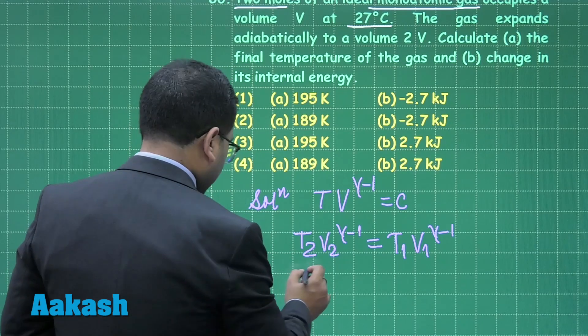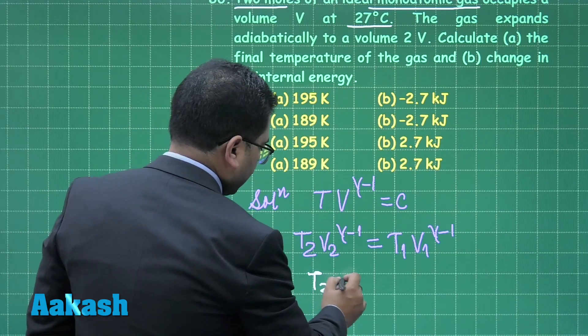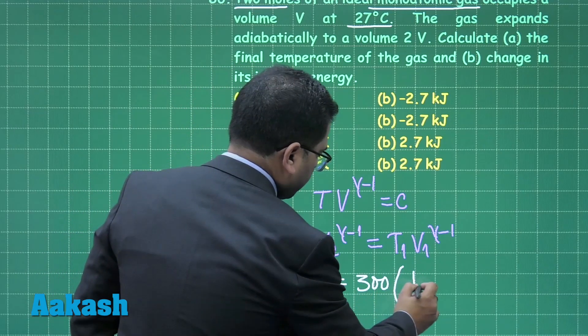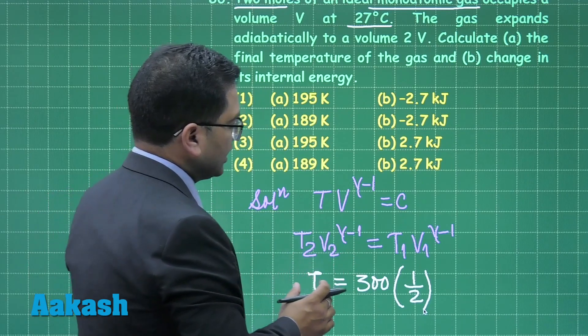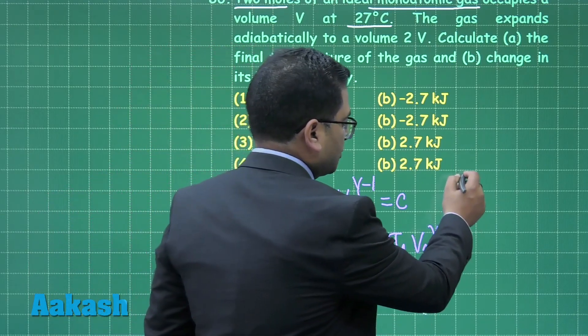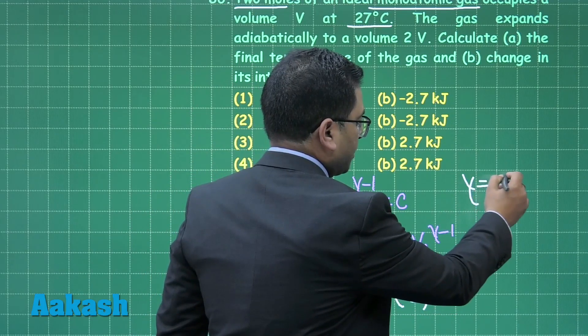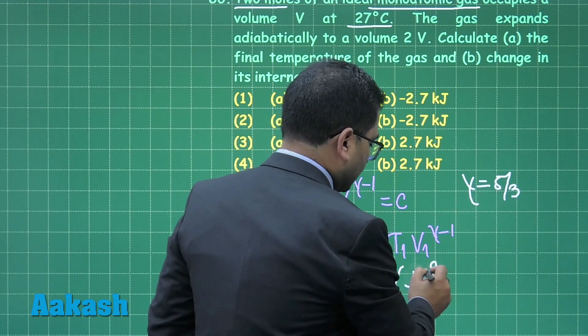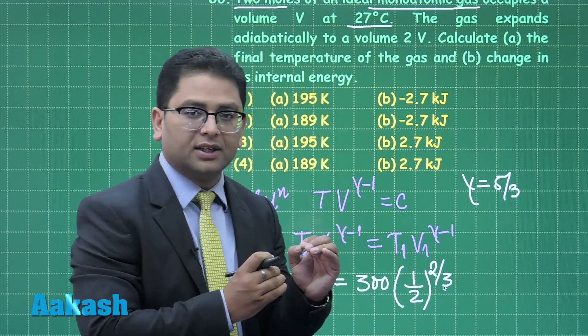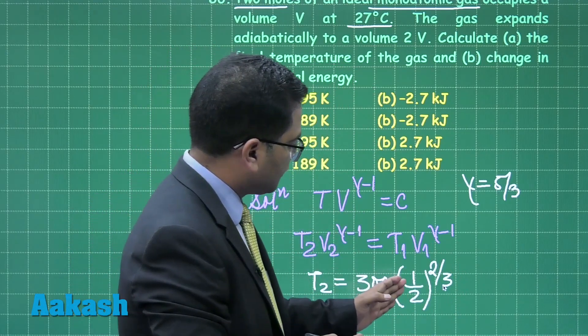And I get the value of T_2 as, right, that is going to be 300 and 1 by 2, because V_2 is 2V, gamma minus 1, 5 by 3 minus 1. Gamma equals to 5 by 3 for monoatomic, that's a straightforward value. That's 2 by 3. Now this demands a bit of effort, like this is 4 raised to the power 1 by 3.